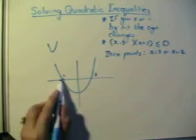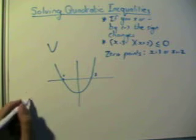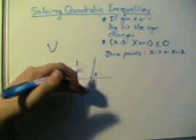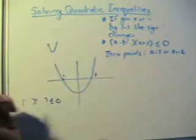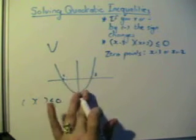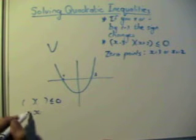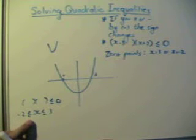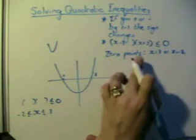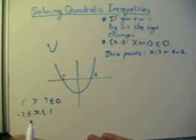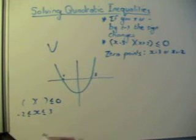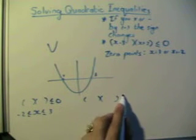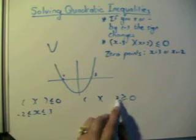If I draw the graph using these x-intercepts and I'm looking for the product smaller than or equal to zero, I need everything underneath the x-axis — that's the part of the parabola between −2 and 3. So x lies between −2 and 3, written as −2 ≤ x ≤ 3. The inequality symbols (strict or non-strict) match exactly what the question gives you.